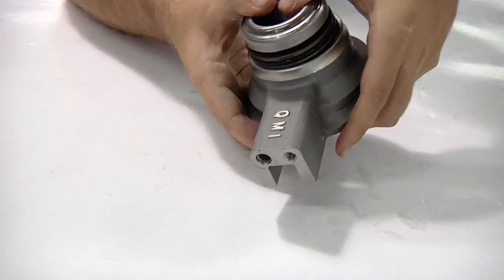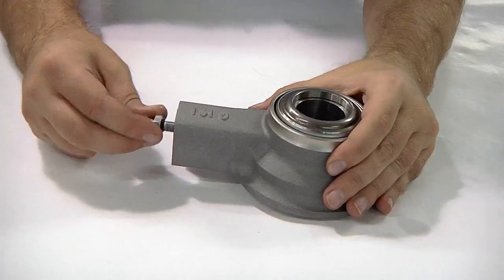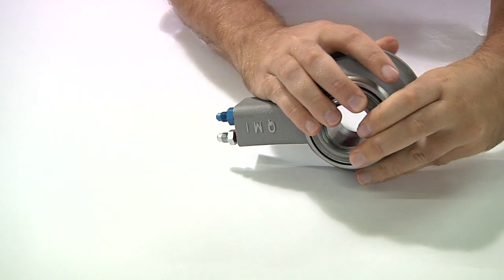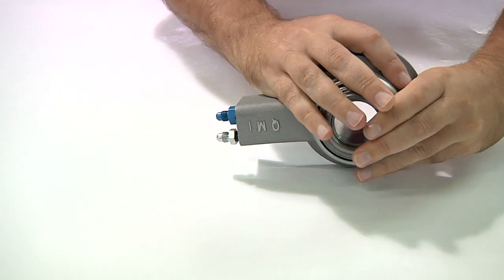Install the bearing and sleeve assembly. Attach AN fittings and lines. Bleed the release bearing and you're ready to reinstall it.